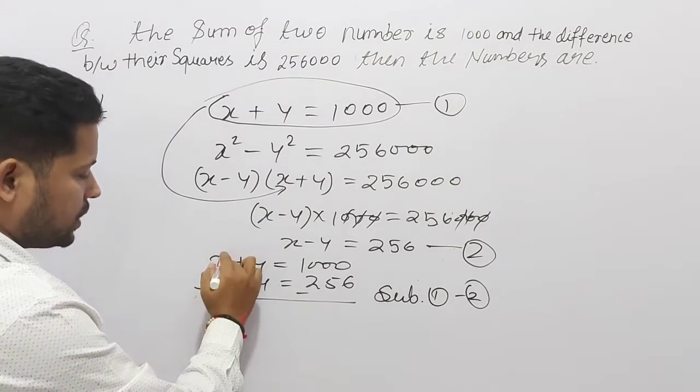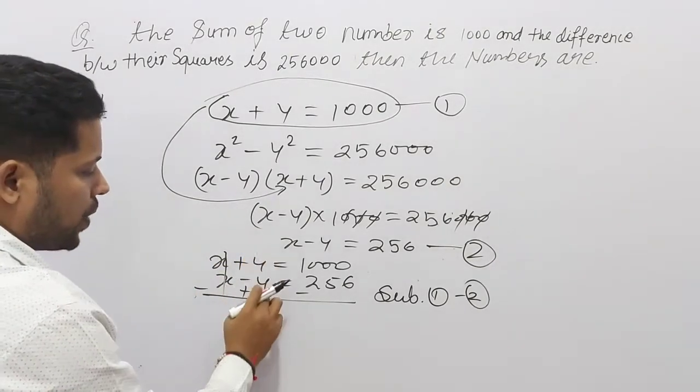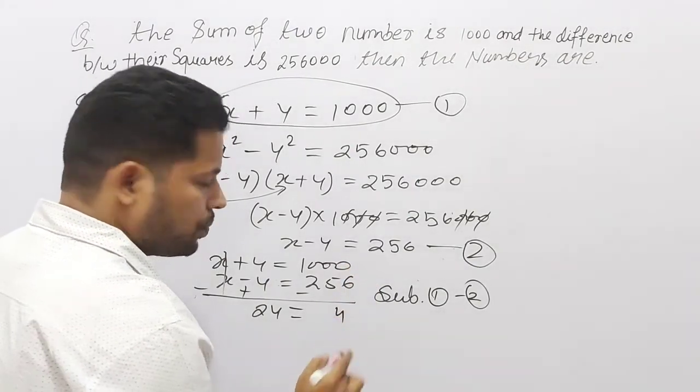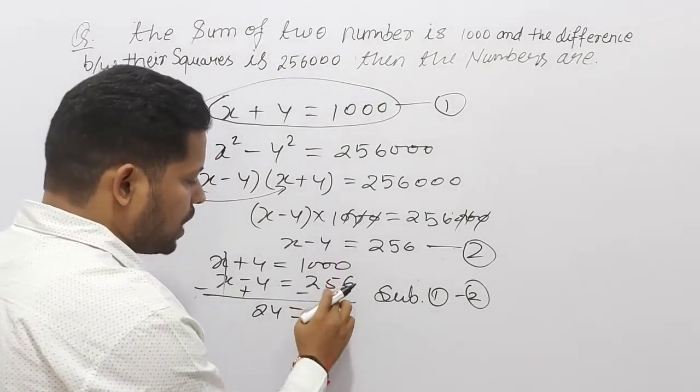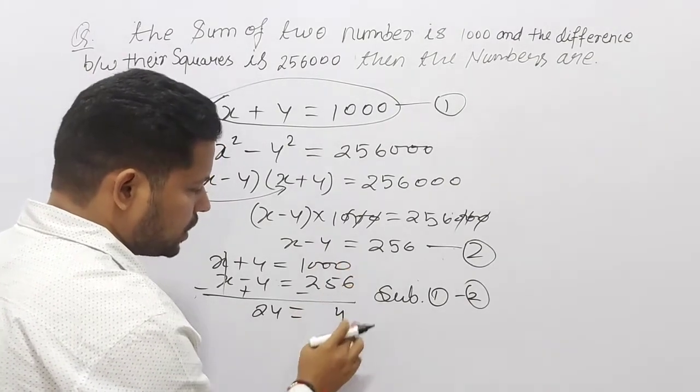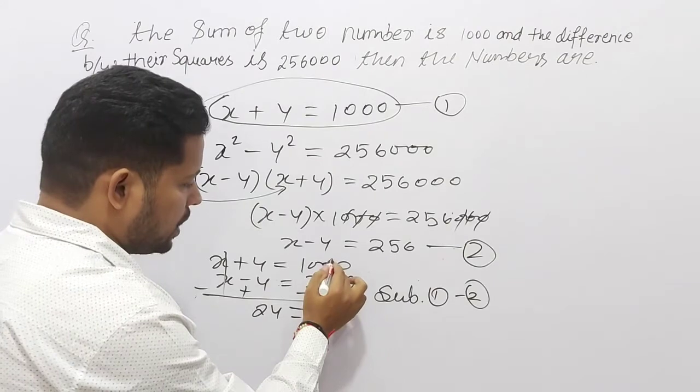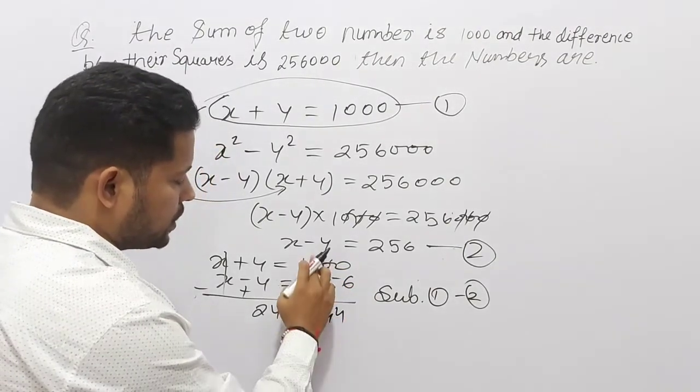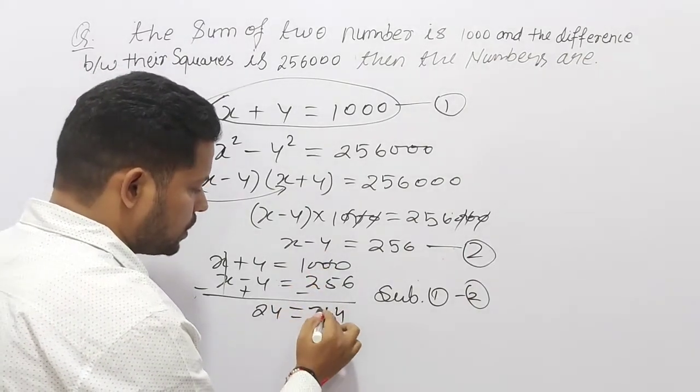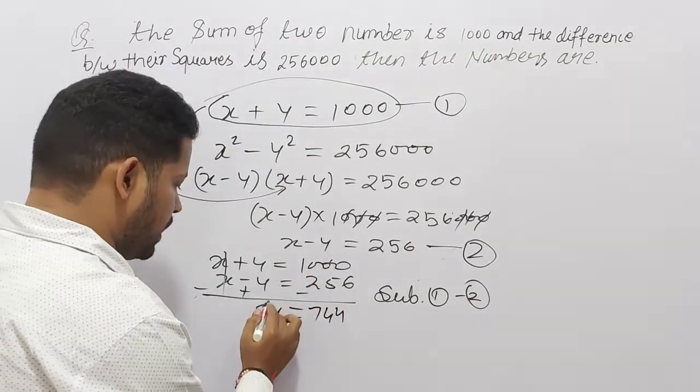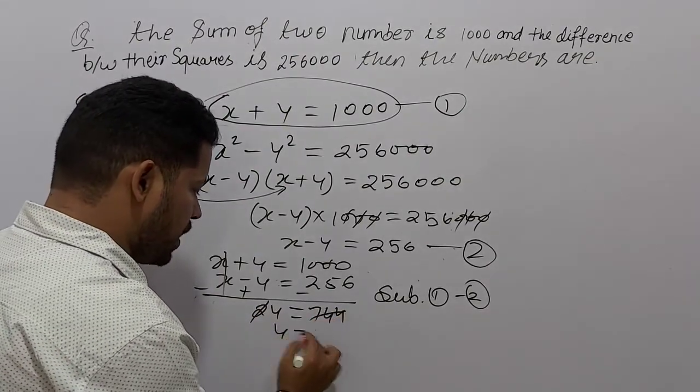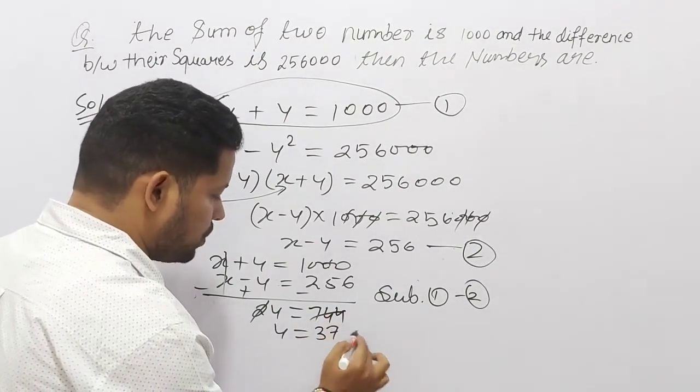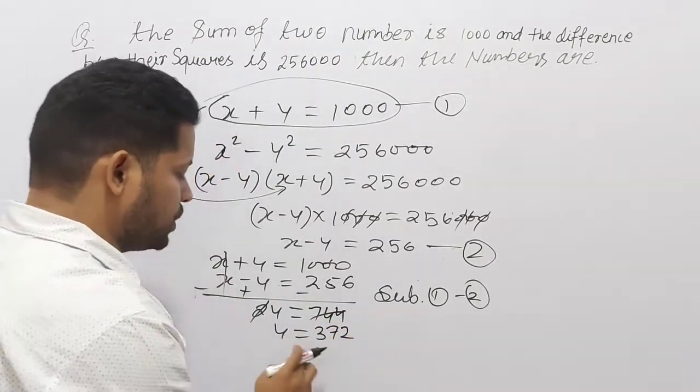Okay? So, यहाँ पर xx cancel out and plus y and plus y is the 2y. और यह subtract होगा. So, 10 minus 6 is the 4 and 9 minus 5 is the 10 minus 6 is the 4 and this is the 9 and 9 minus 5 is the 4. Okay? And this is the 9 and 9 minus 2 is the 7. So, यह cancel होगा 2 से. So, y की value क्या आ जाएगी? 2, 3s आ 6, 2, 7s आ 14 and 2, 2s आ 4. So, this is the y.